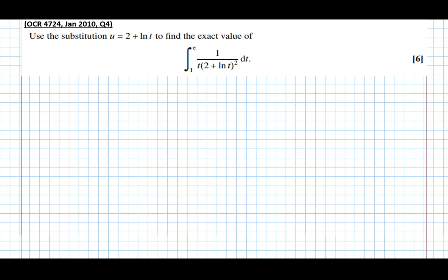So the first thing we're going to do is exactly what the question asks. We're going to let u equal 2 plus log t. That means that du by dt equals the 2 differentiates to 0 and the log t differentiates to 1 over t. That means that du equals 1 over t dt, which means that t du equals dt. We're going to need that later.